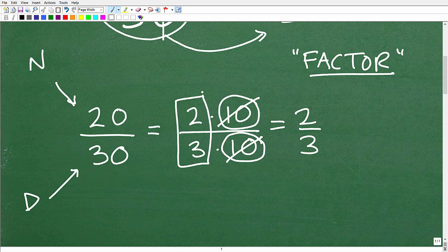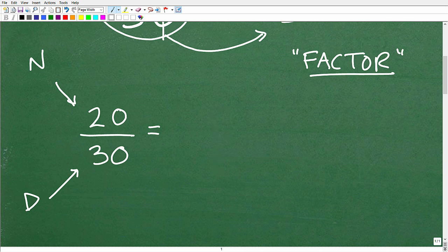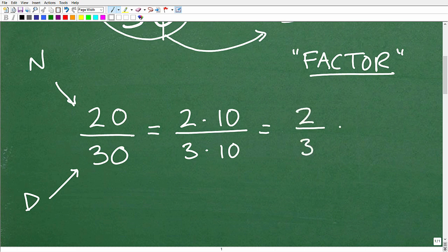So when you have like factors, one in the numerator, one in the denominator, you can simply cross-cancel them, and that is equal to 2 thirds in this particular example, because that's what's remaining. So now let's just break this up. Let's look at this a little bit differently. So here we have 2 times 10, and then this is 3 times 10.